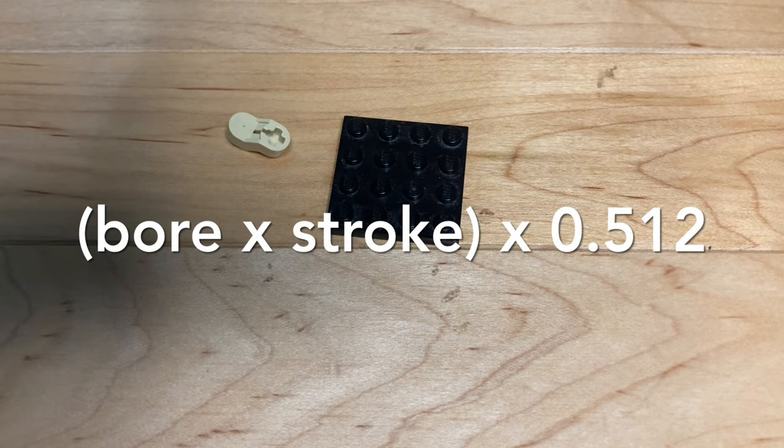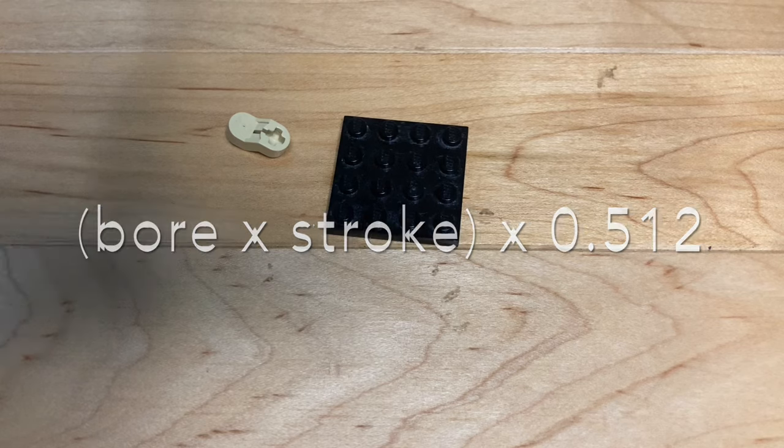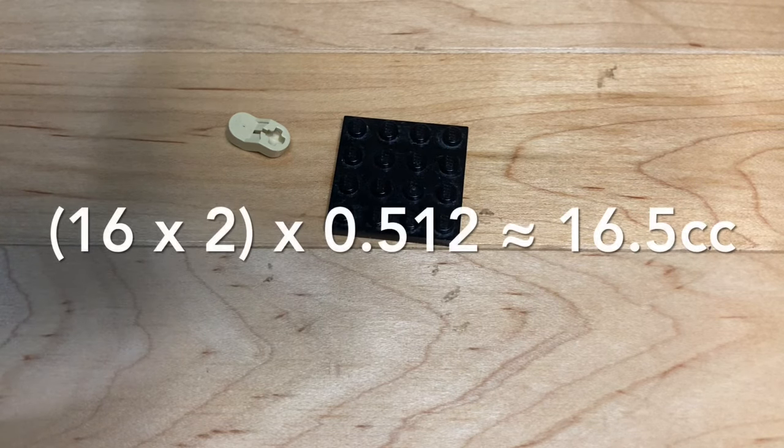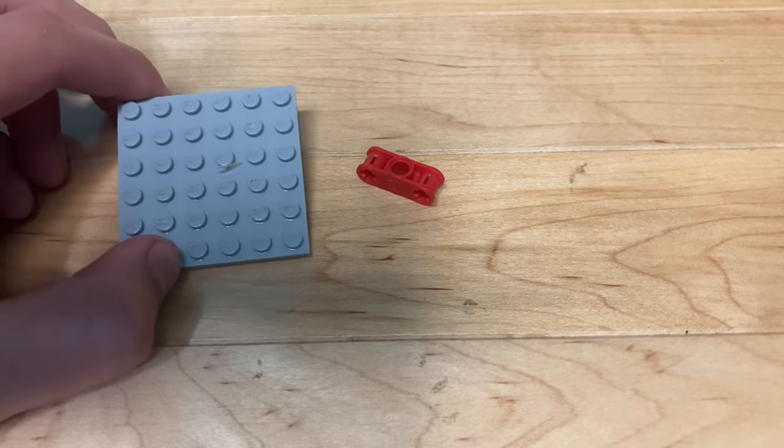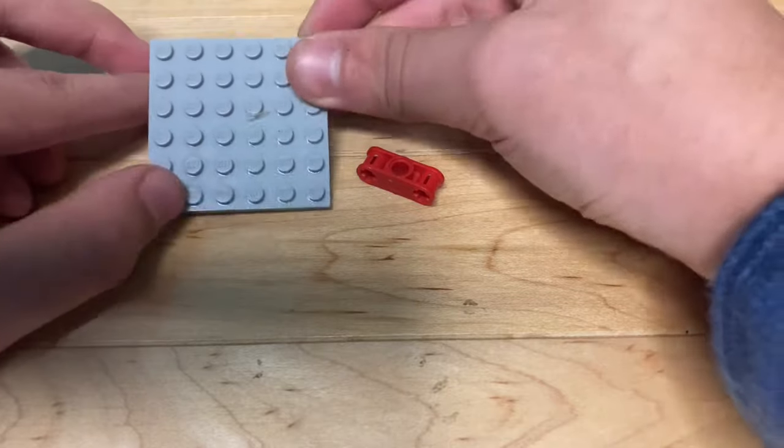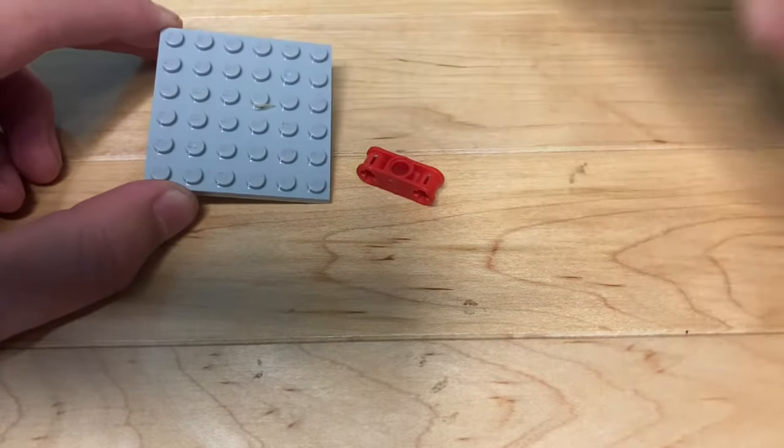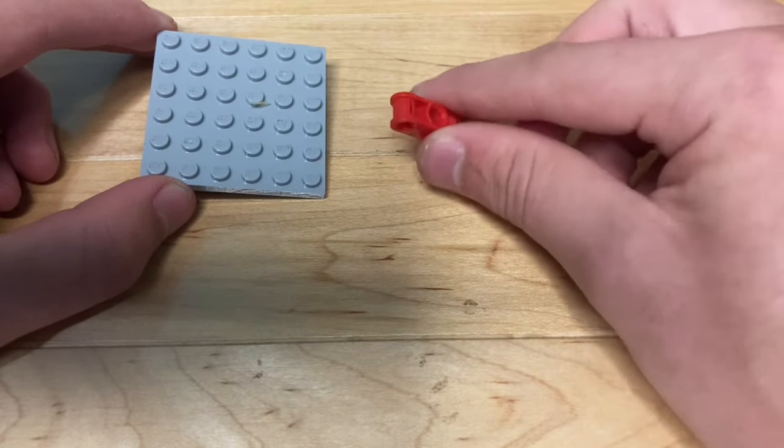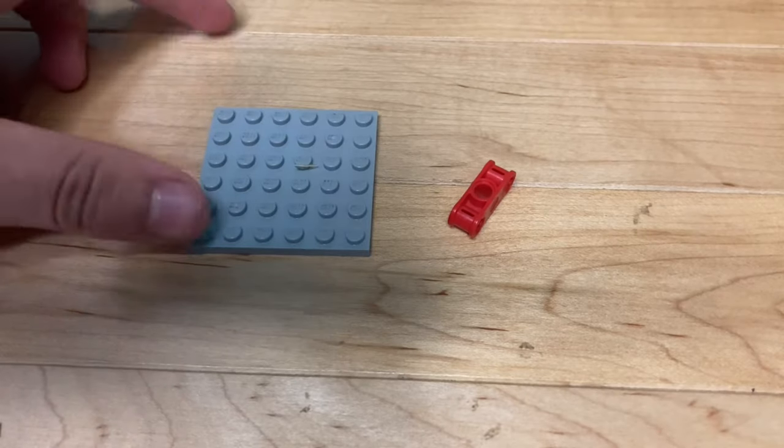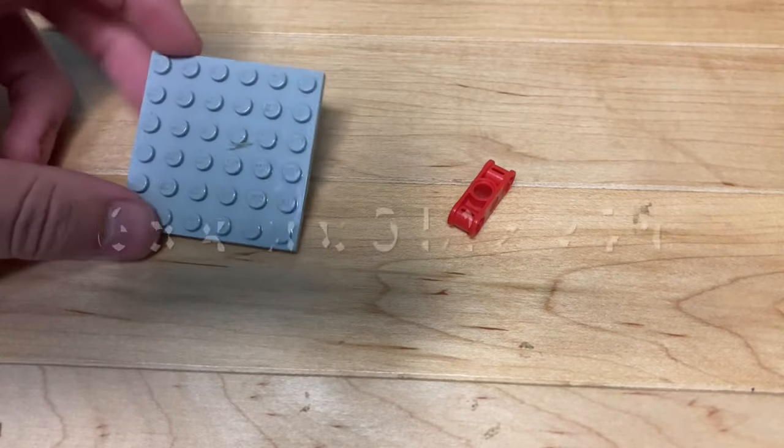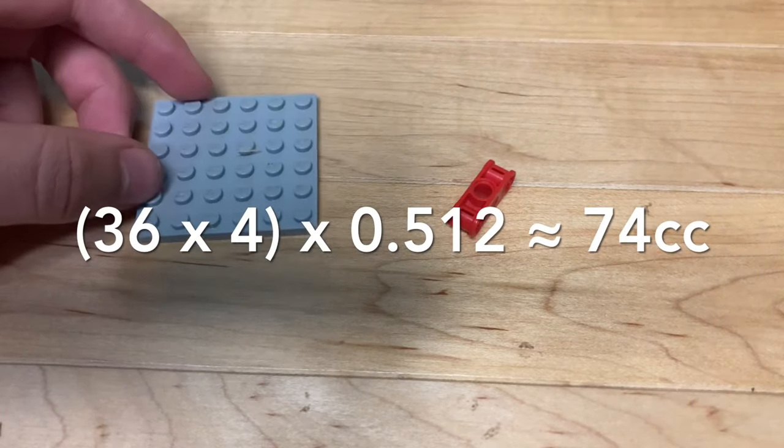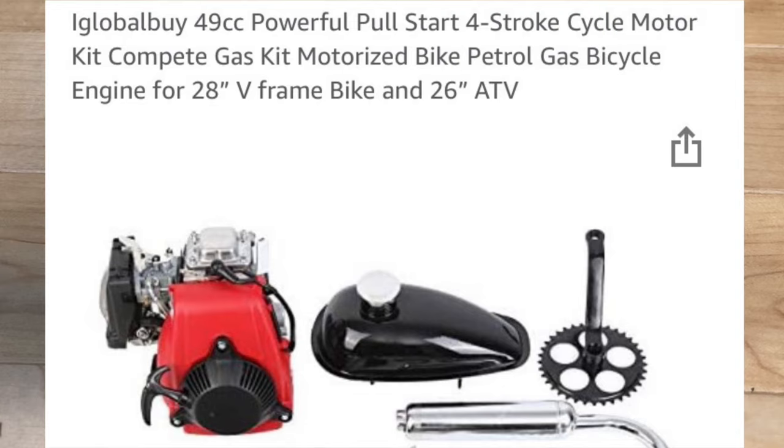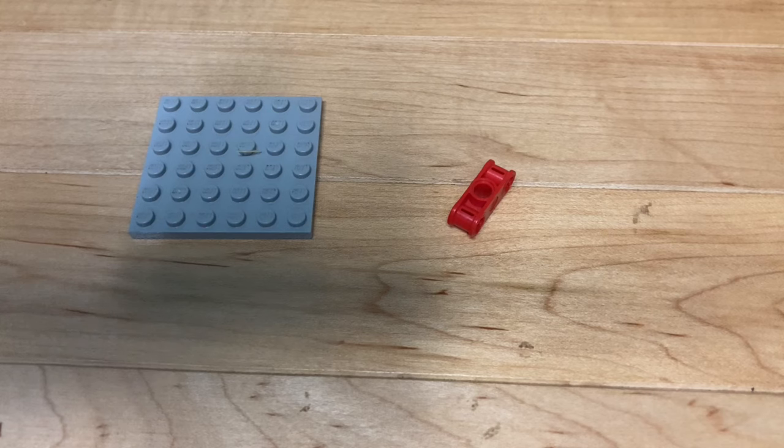As we discussed a second ago, the top area of the piston, in this case it's a bigger one, so 6x6 is 36 times 4, which is the total stud length of the stroke from this crank piece. We get around 144 cubic studs, multiply that by 0.512, and you get around 74 cubic centimeters. Most single cylinder bike engine kits are less displacement than this, and this singular piston and crank made out of LEGO has more displacement in a cylinder than this single engine.